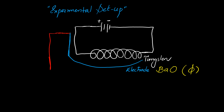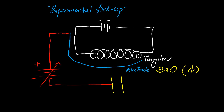The setup basically consists of a variable potential source, which changes the potential of the electrode. At the end, this setup was connected with a very thin hole or slit. The role of the slit is to provide a narrow beam.